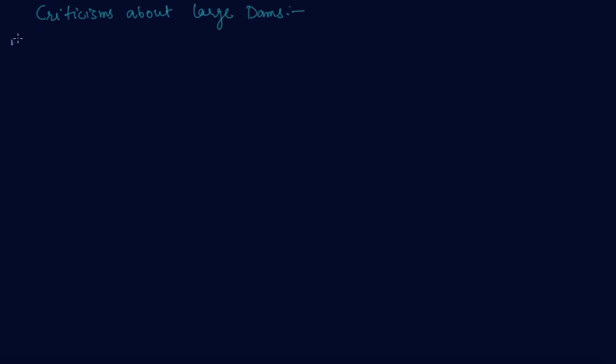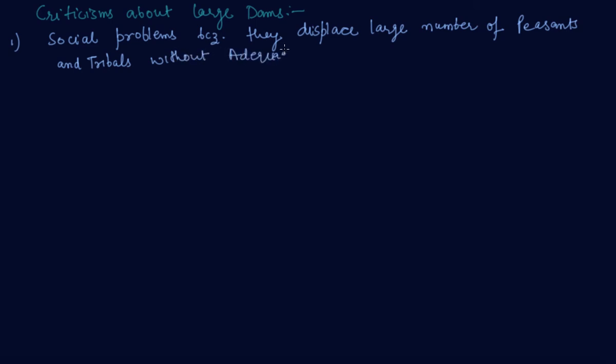First one is social problems because they displace large number of peasants and tribals without adequate compensation or rehabilitation. This is the first criticism reason for dams.